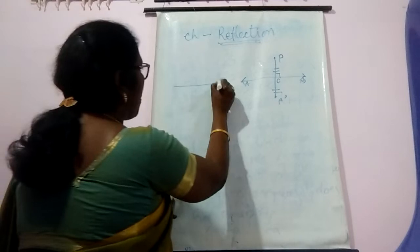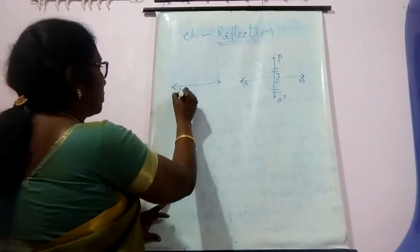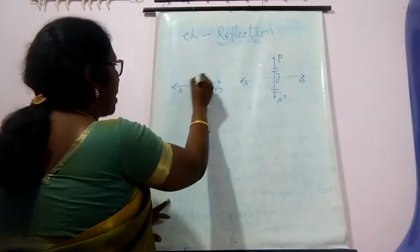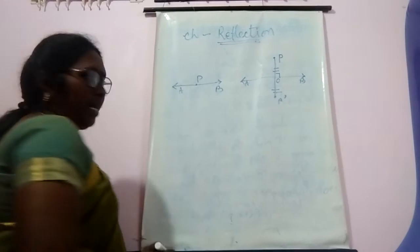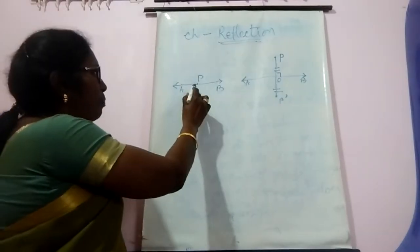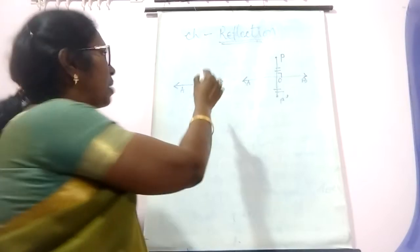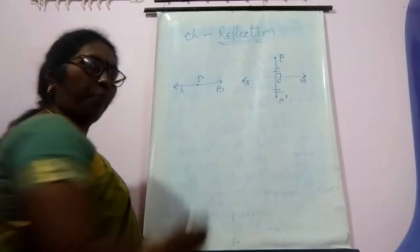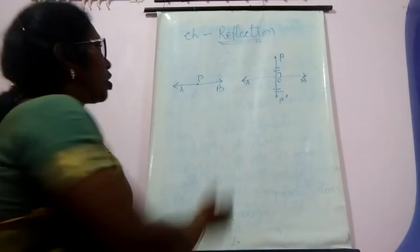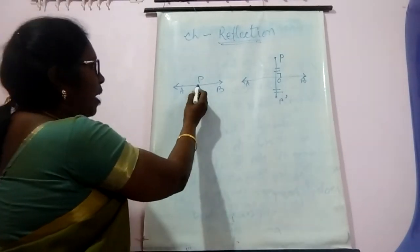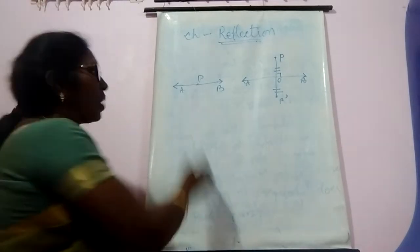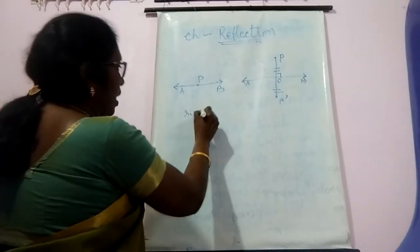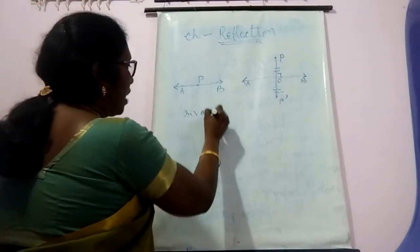Suppose AB is a line and P is a point on the line. When this point P reflects through this line AB, the image is also P. So the object and the image are the same here. Such points are said to be invariant points.